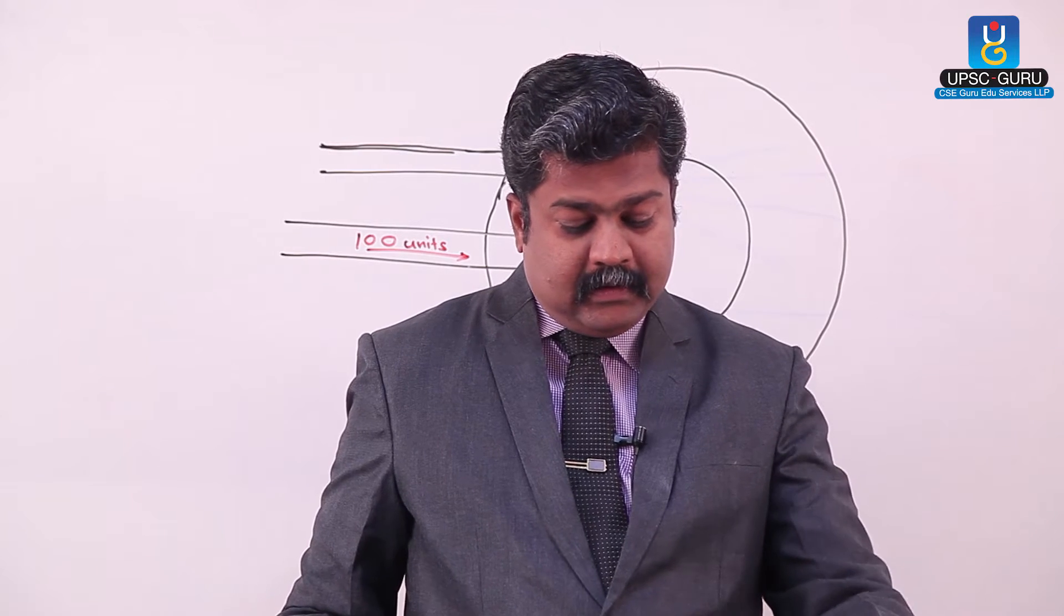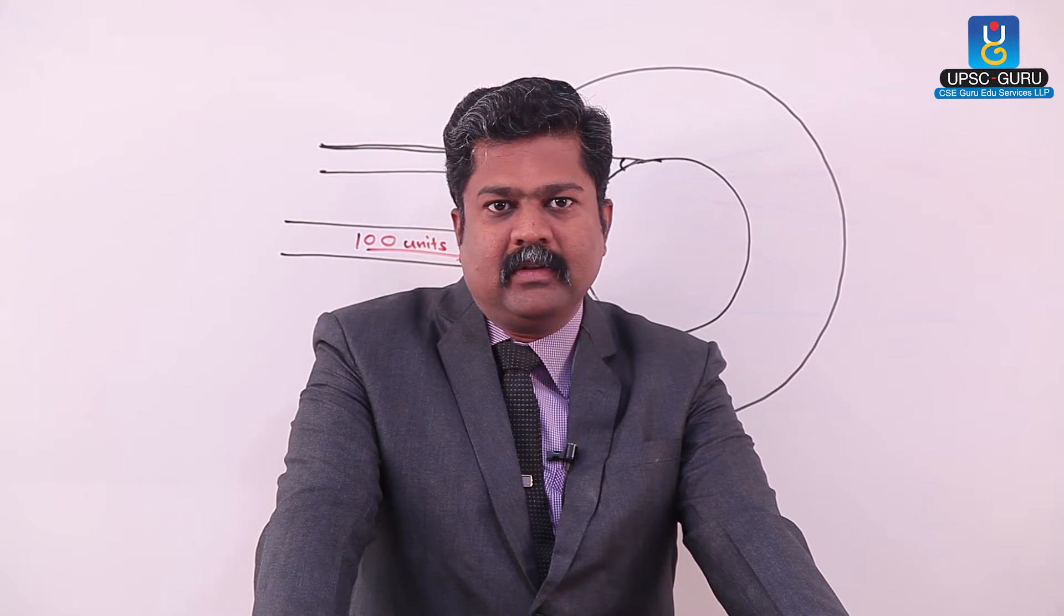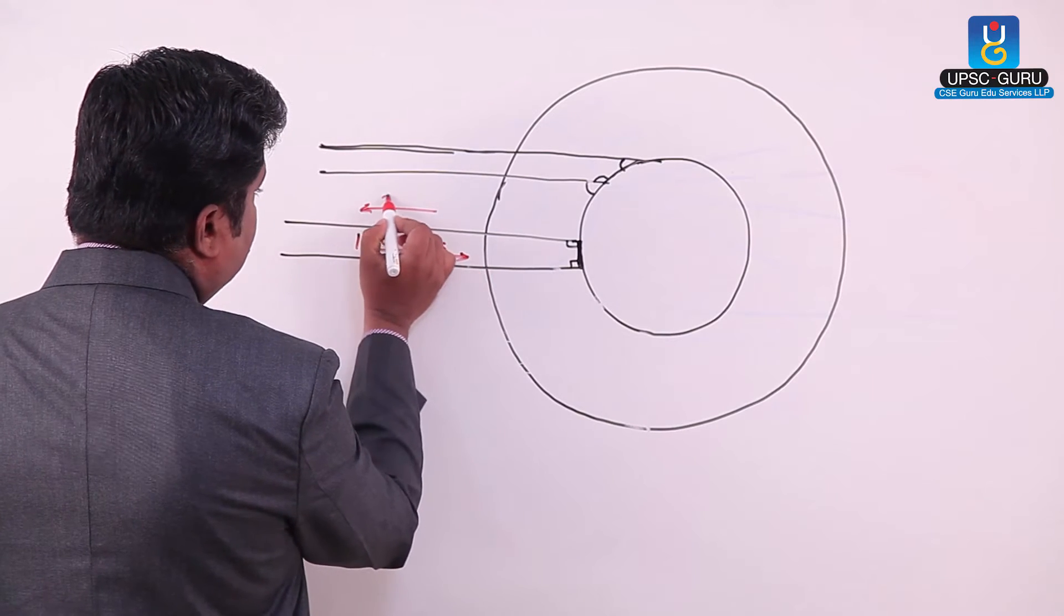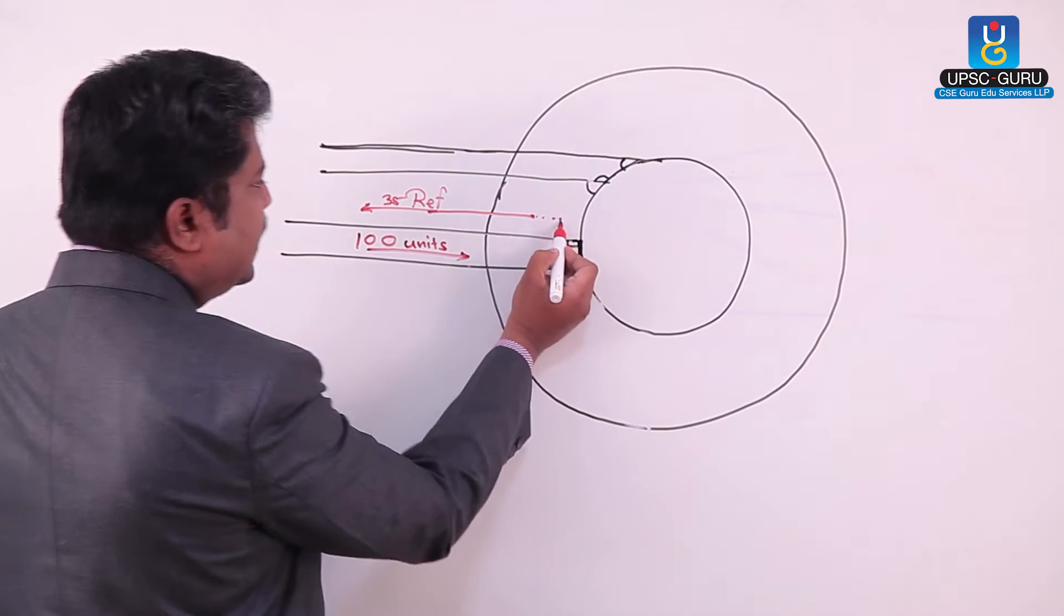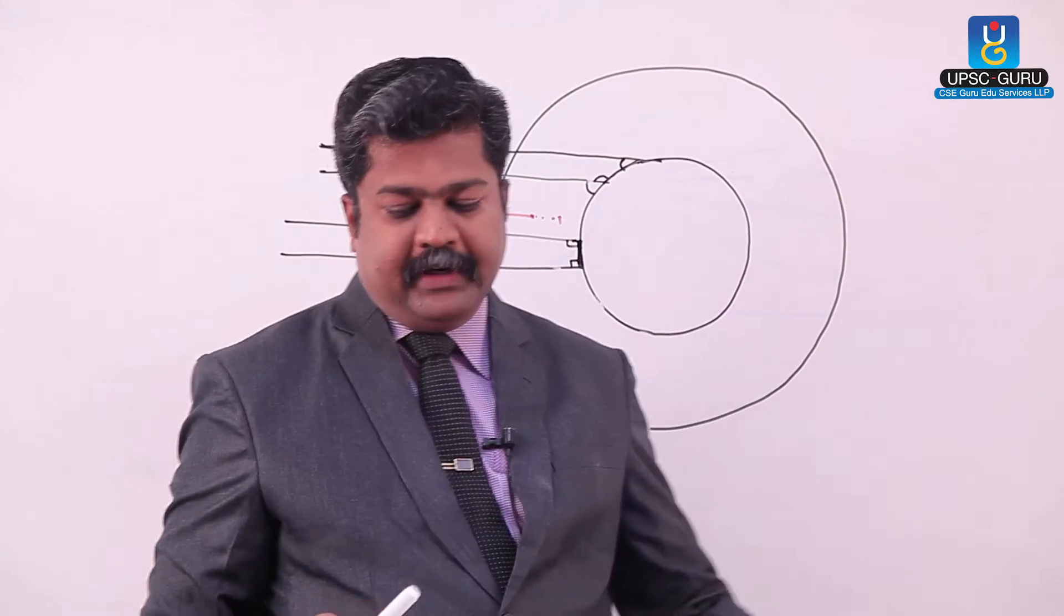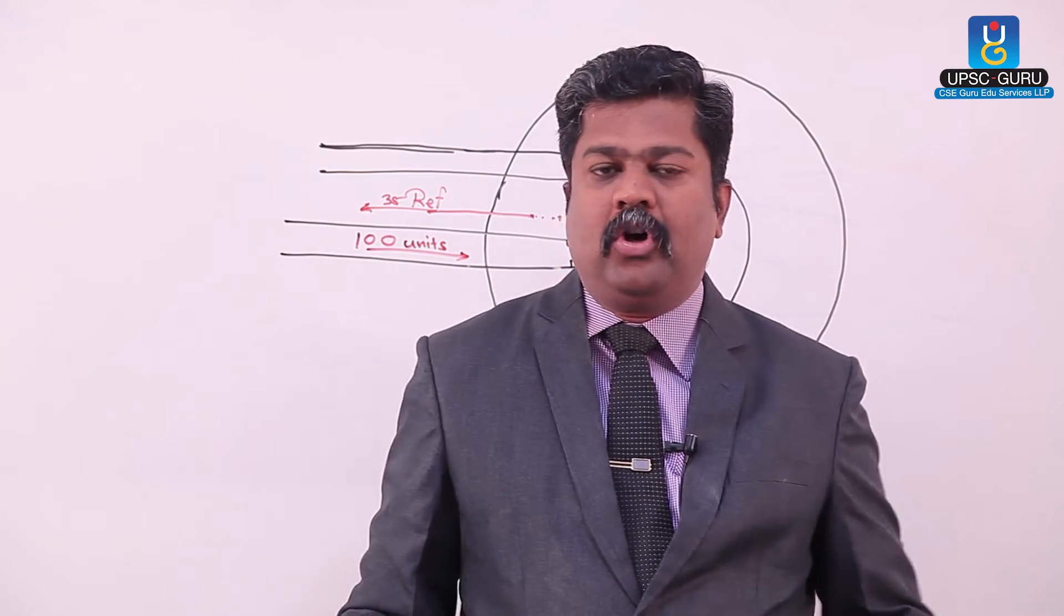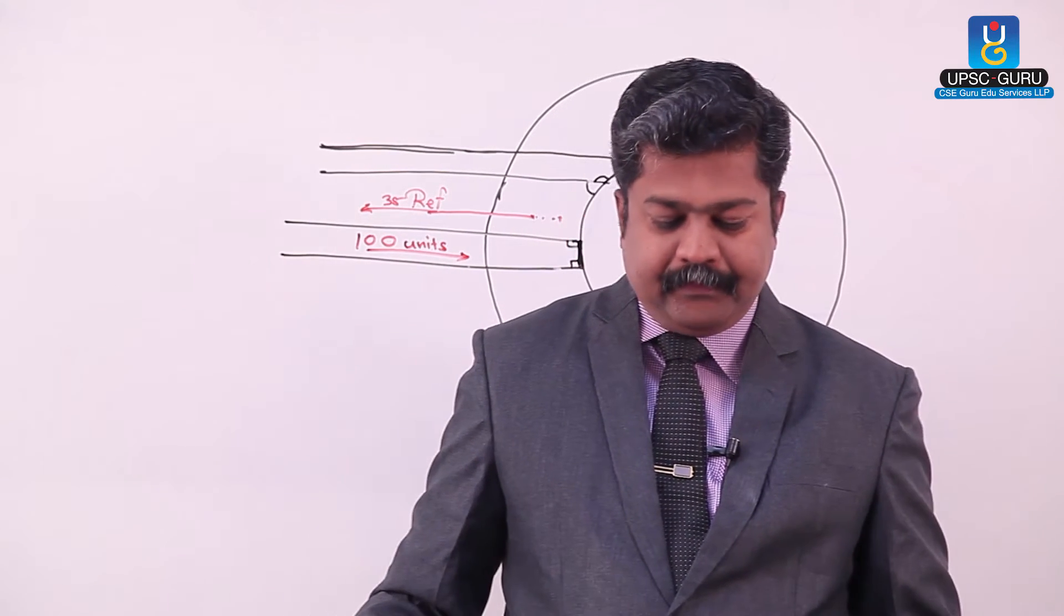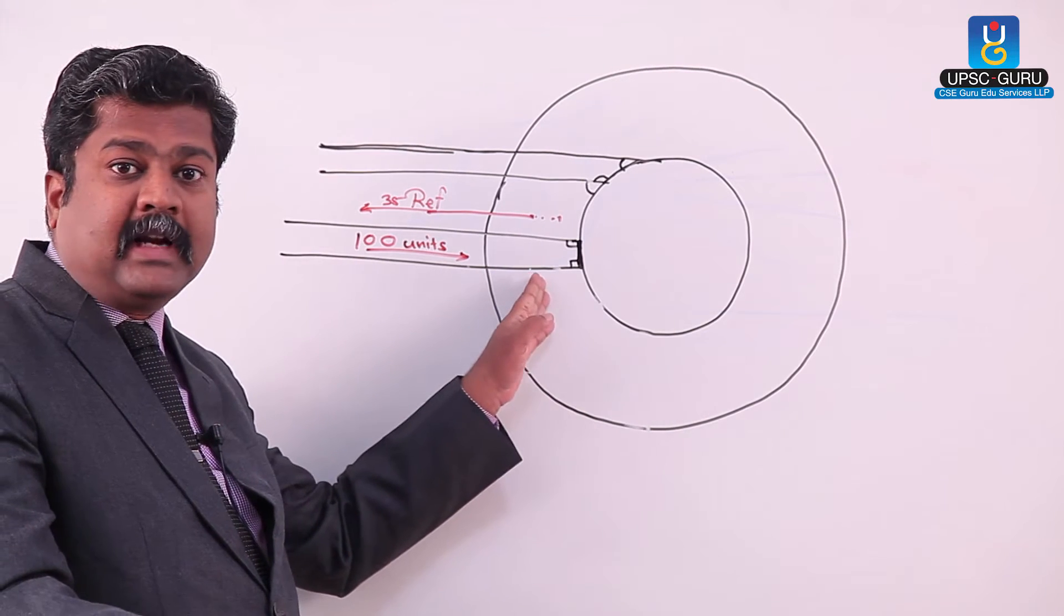Then out of that 100 units, the simple thing is that 35 units are lost in the space by atmosphere only. So whatever the 100 units are coming, 35 units by reflection from atmosphere only. It may be from this part, it may be from this part anywhere. But from that 35 units are lost by atmosphere. That means on Earth's surface, there should be only amount of 65 units should reach on Earth's surface. But again, the problem is that 14 units are absorbed by atmosphere. You are aware that gamma radiations, all that they are absorbed in upper part only. Then certain ultraviolet radiations are absorbed by ozone.